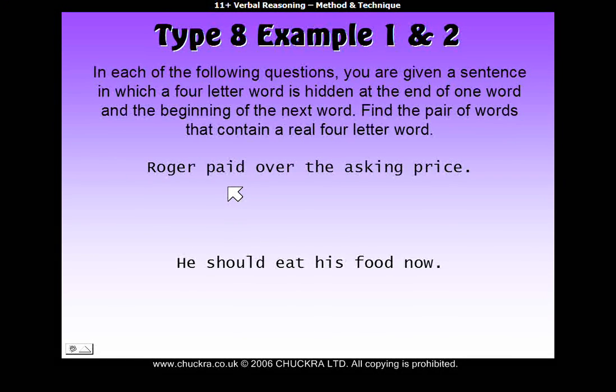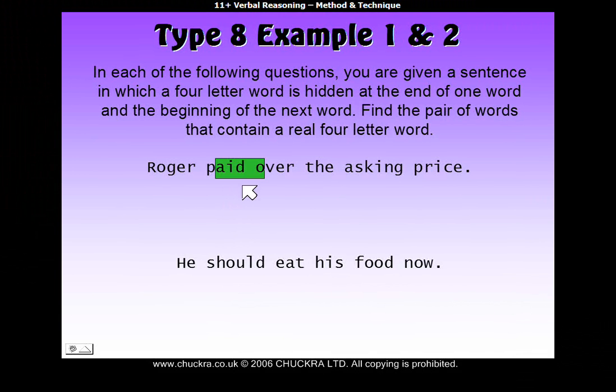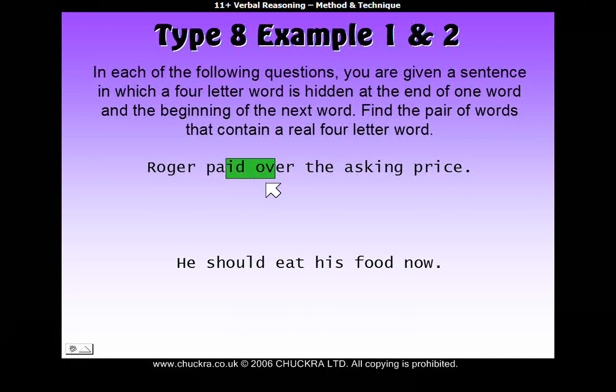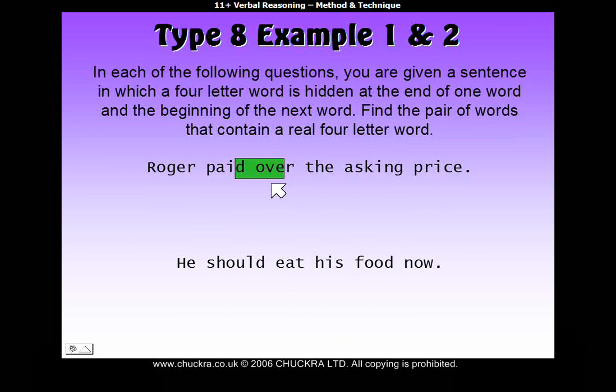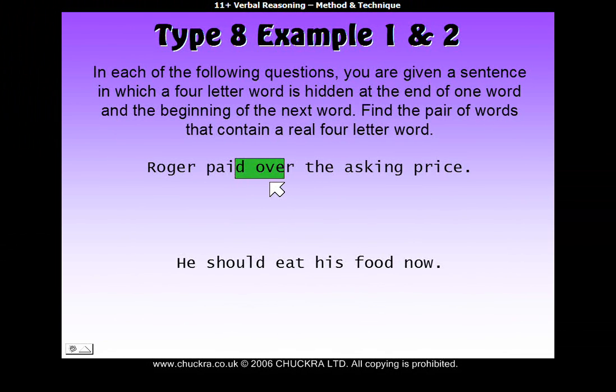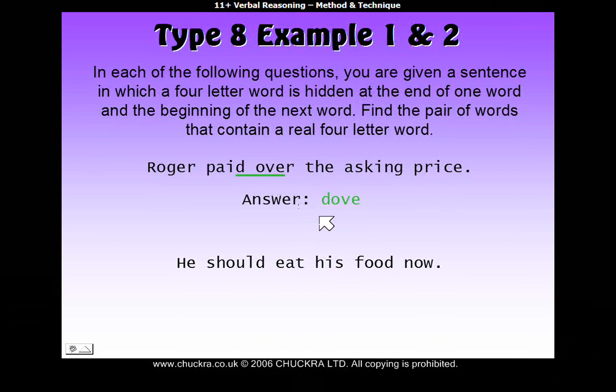So you keep going and you now need to move on to the next pair. So you've got paid and over and you try again, three letters from paid and one from over, making, if you read it as if they were a real word, in other words all the letters were next to each other, it would say 'aido', which is not a real word. And then the next, two from paid and two from over makes 'aidov' or 'aidov', again not a real word. And you go on to the next one, one from paid and three from over, which if you pictured it as a real word would say 'dove'. So our answer is dove.